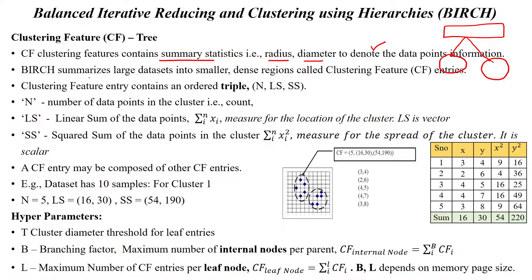The clustering feature summarizes large data sets into smaller cluster features with dense regions. The clustering feature has three values: number of data points, linear sum of the data points, and squared sum of the given data points. The formula is given for all three terms. The number of data points is 5, the linear sum of the x coordinate is 16, the y coordinate total is 30, the squared sum of x is 54, and the squared sum of y is 190.